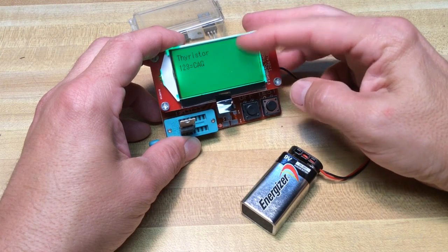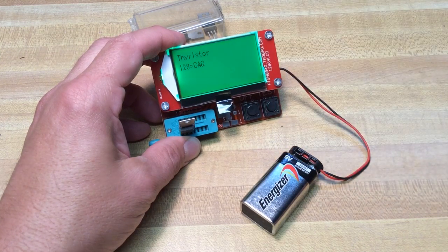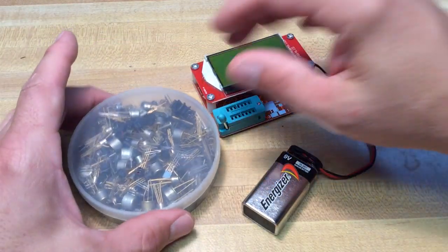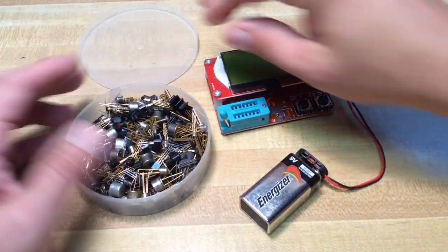And it shows me it's a thyristor, another form of an SCR. In other words, a silicon controlled rectifier. It did show me the pin out there, the cathode anode and the gate.